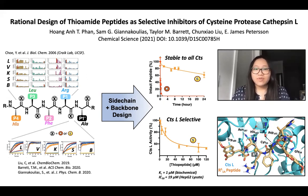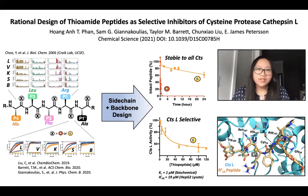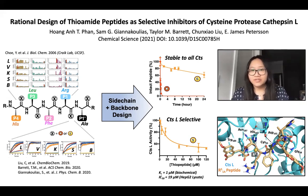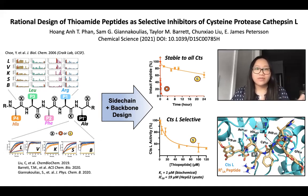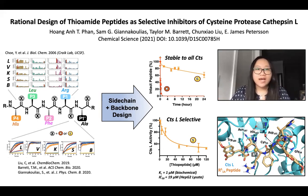Peptide-based inhibitors are promising since they can offer high selectivities compared to some traditional small molecule inhibitors, but they are often subject to degradation in vivo. So for this paper, we brought together the knowledge from previous substrate profiling studies from other labs and the thioamide precision scanning data from our own lab to design specific stabilized peptide inhibitors of Cathepsin-L.